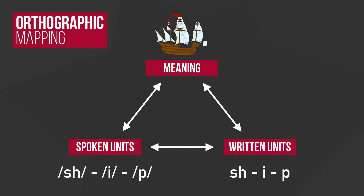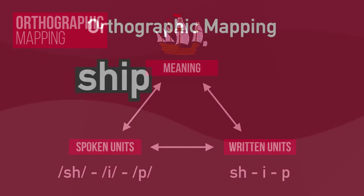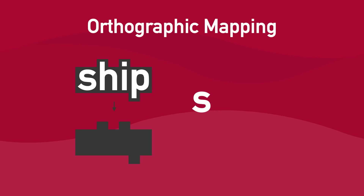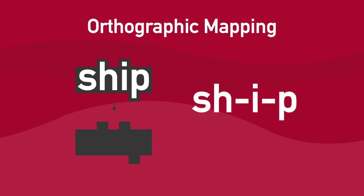Unfortunately, there are many problems with this practice. To understand those problems, we will go back to the concept of orthographic mapping introduced in the video on reading development. Orthographic mapping is the process by which written units, spoken units, and meaning are bonded together, resulting in the automatic recognition of a word. Adults automatically recognize 30,000 to 60,000 words — they did not acquire this impressive sight word vocabulary by memorizing whole words.